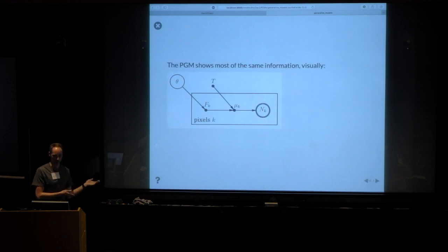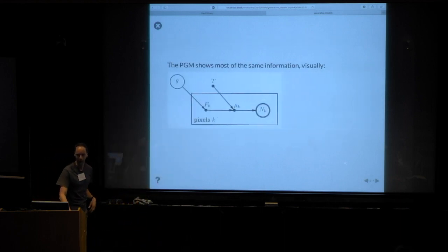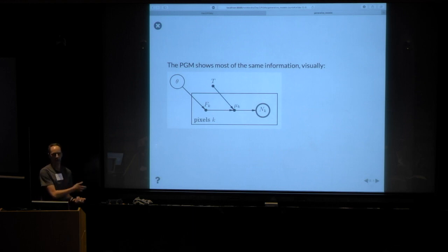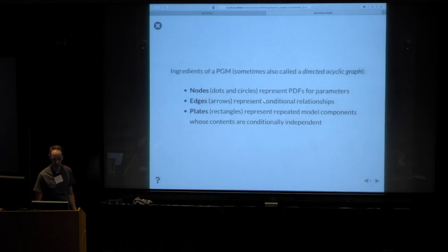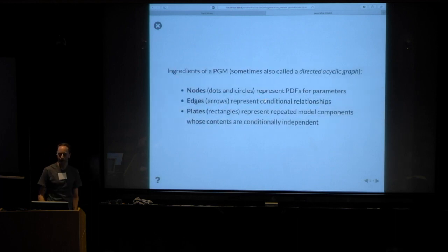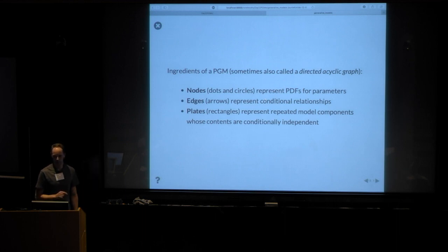Here's a picture — the PGM — that captures most of that. It doesn't have all details like the word 'Poisson,' but it tells you the same structure as the bulleted list: what is connected to what. Let's go through the conventions. There are multiple conventions in some details, but the basic ones on this slide are solid. I like to stick to a convention you can draw with pencil on paper, no fancy coloring.